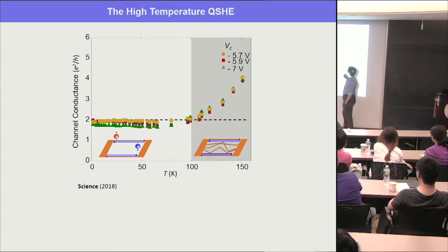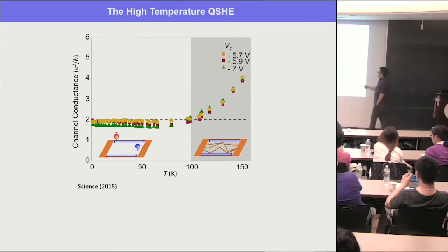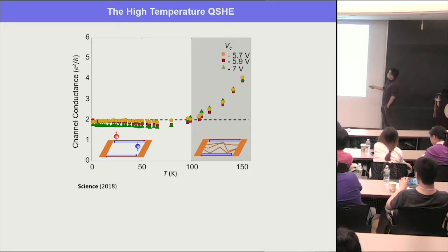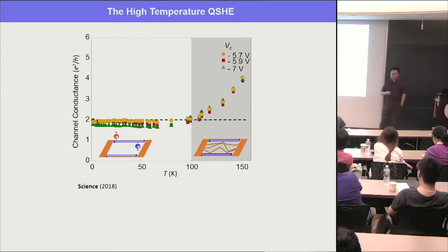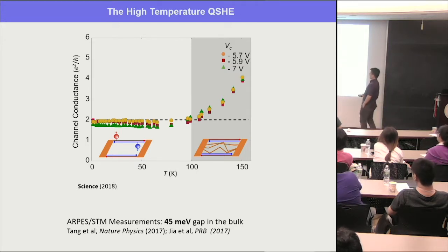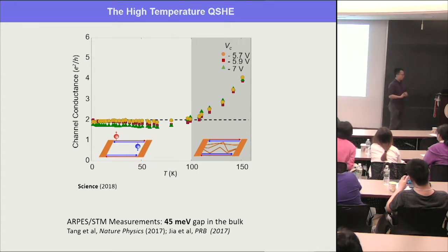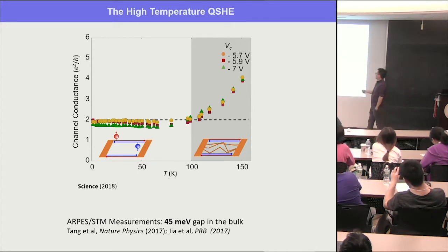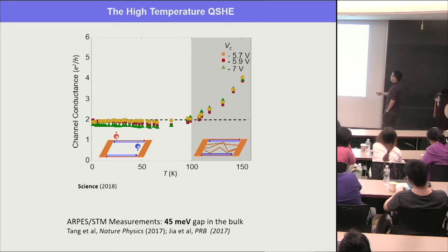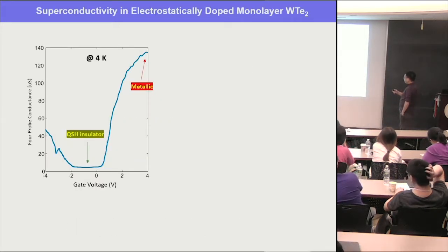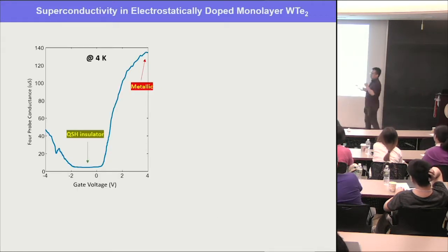What's also surprising is that we observe quantized helical conductance up to very high temperature — up to 100 Kelvin. The data stays near 2e²/h until about 100 Kelvin, then increases as the bulk becomes thermally activated. This is consistent with a bulk gap on the order of tens of meV — much larger than the semiconductor heterostructure systems — and we're doing more experiments to determine the gap more precisely.